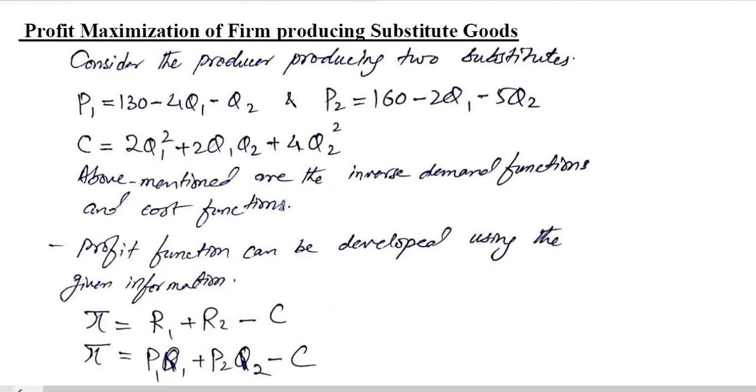Another economic application of the optimization process would be the profit maximization of a firm that is producing substitute goods. So let us get to the equations of it.